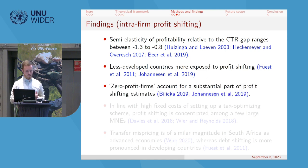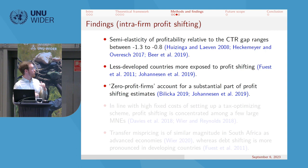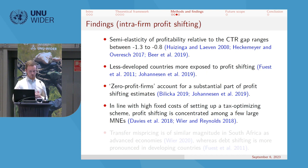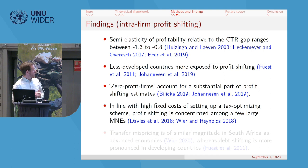Much of this profit shifting is driven by firms trying to reach zero profit — so-called 'zero-profit firms.' When these are removed, it becomes hard to find evidence of profit shifting. Consistent with high fixed costs of setting up tax optimization schemes, profit shifting is concentrated among a few large MNEs. One study found that removing the 10 largest companies eliminated detectable profit shifting entirely.